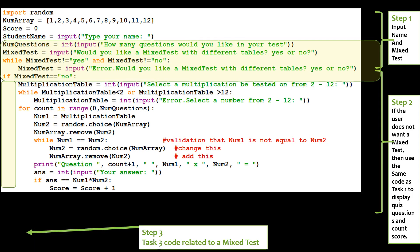We have, of course, input random. We have the num array, 1, 2, 3, 4, 5, 6, 7, 8, 9, 10, 11, 12. We have score equals 0. We have student name equals input your name. Now here are the new 5 lines of code that we need to add, in order to satisfy the requirements for task 3.